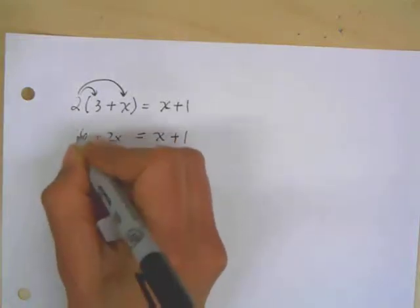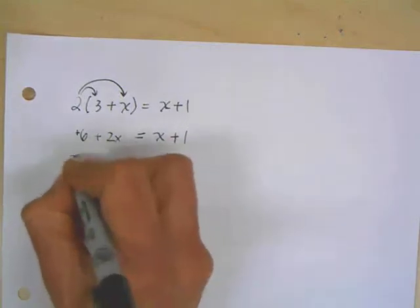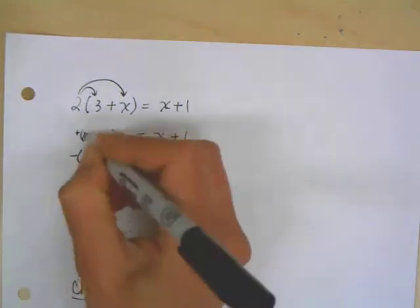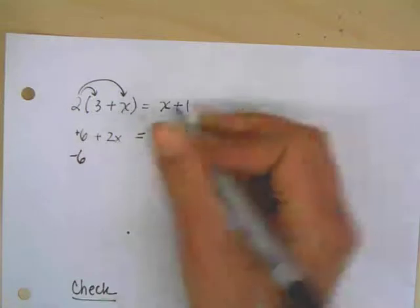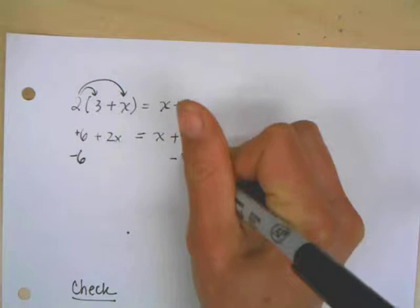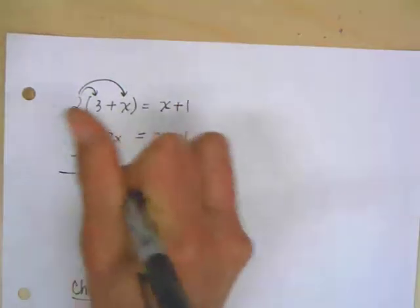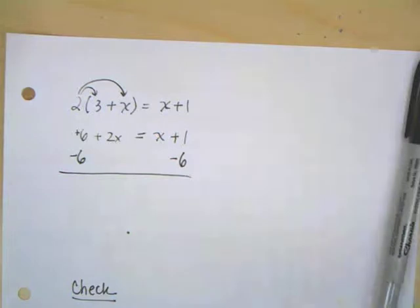So I'm going to get rid of the 6. And the way to get rid of the 6 is I'm going to do the opposite. Right now it's like a plus 6 there. So I'm going to do the opposite, which is subtract 6 from both sides. And once again, I'm lining up these numbers. I'm not going to put the minus 6 under the x. I'm going to put the minus 6 under the 1 because they're both constants.